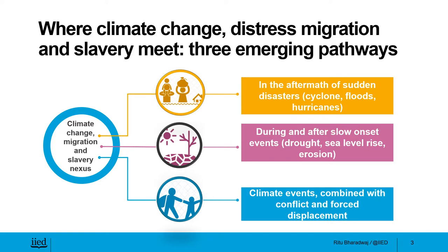The second pathway indicating this nexus exists in the event of slow-onset disasters like drought, desertification, sea level rise, or erosion, which result in crop loss, drinking water shortage, food insecurity, and so on. Situations like these push communities dependent on natural resources for their livelihoods to pursue dangerous or risky migration opportunities, because they are in despair and left with no option for survival and livelihood. Research in the brick sector in Cambodia, also known as blood bricks, maps the intricate details of how farmers whose livelihoods have been undermined by climate change are forced into intergenerational bondage.